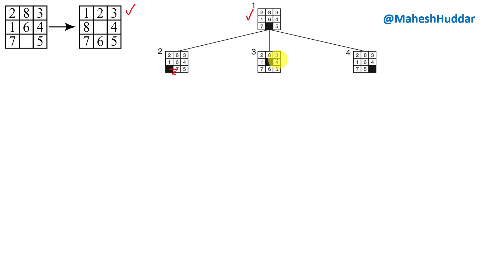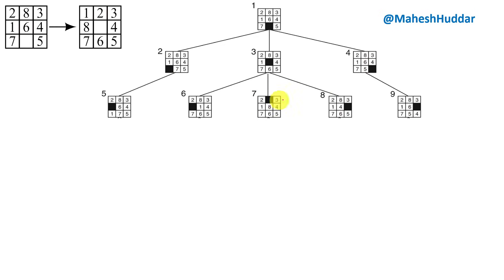For the next state, the blank can move in four directions, but moving to the bottom gives the initial state again, so that is not suitable. The valid moves are left, up, and right — three possibilities. Similarly, for the third successor, moving left returns the initial state, so only the upward move is valid. Once performed, we get the new states and compare each against the goal state.